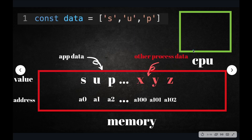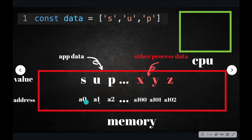Here's how the CPU essentially caches stuff. Let's assume we have a piece of data here — an array, "SUP" — three characters. So in memory, when we load this stuff, these are the addresses: A0, A1. And this is my application data, "SUP".